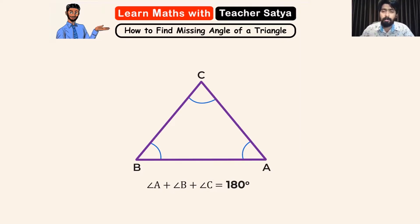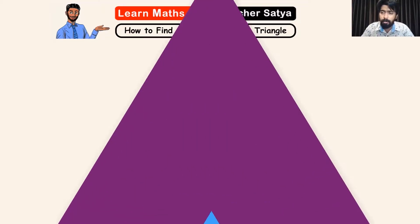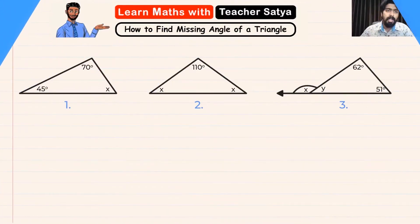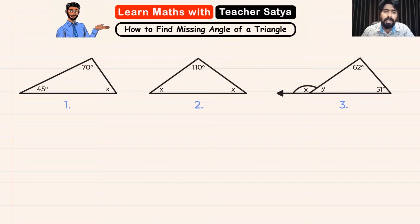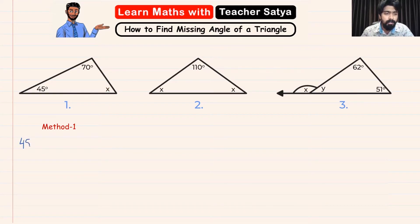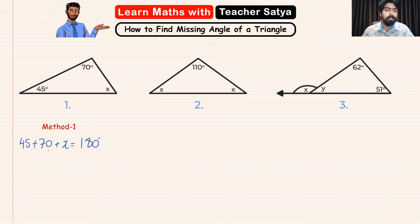Now let's solve some questions using this property. In question one, we see that the first angle is 45 degrees, the second is 70 degrees, and the third angle is angle x. So first let's write the equation down: 45 degrees plus 70 plus angle x is equal to 180 degrees.